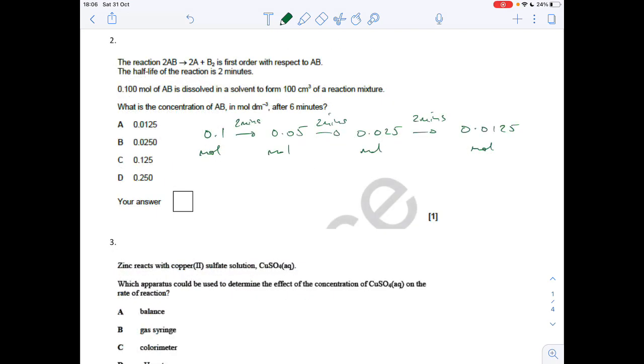Question 2: Got to be careful here because it wants to know what the concentration of AB will be after six minutes. We're told the moles of AB at the start. After the first half-life, after two minutes, that's going to half to 0.05, another two minutes to 0.025, and another two minutes, or six minutes altogether, it's going to go down to 0.0125 moles. The concentration is moles divided by volume, so 0.0125 moles in a volume of 100 cm³, that's 0.1 of a decimeter cubed, so that comes out at 0.125 moles per decimeter cubed. Option C again.